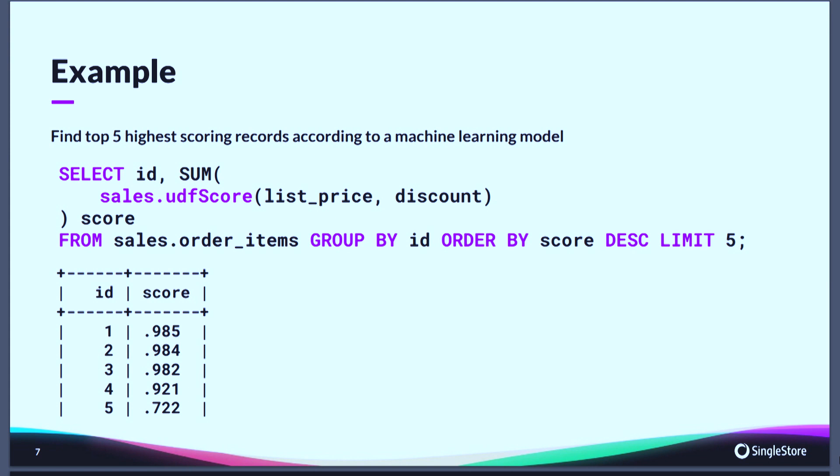A quick high-level example: which users are going to continue subscribing to my service if I offer a discount? We don't really care how the model comes about, what language it's written in — whether Python or Rust. If it's compiled to WASM, we can take it and execute it. It doesn't have to be just a machine learning model; it can be any logic. That's the moonshot.